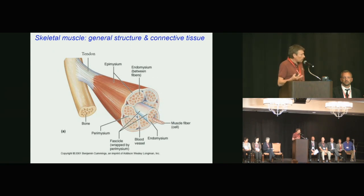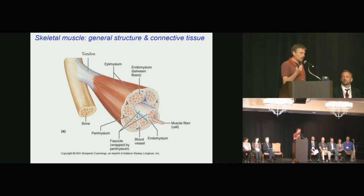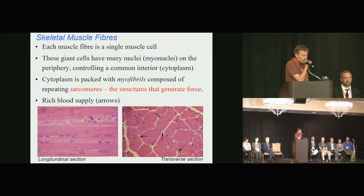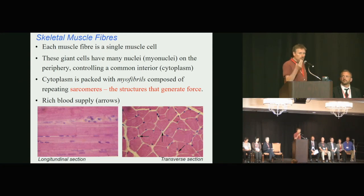Normally you have a bone, an inelastic tendon, and a muscle. The muscle gets shorter, pulls on the tendon, the tendon pulls the bone, and you articulate around a joint. The muscle is made up of hundreds of thousands of muscle fibers, packed full of sarcomeres — the protein arrangements that generate force.